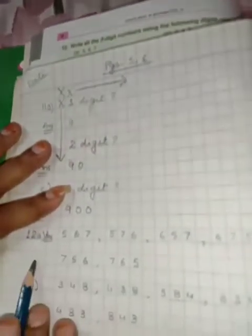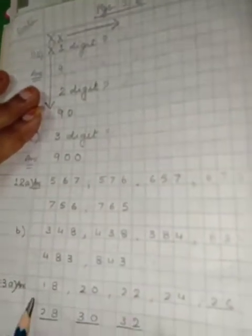12A answers also I have written. Three digits given. You have to make all three digits number. Here you see the answer. I have written 13A also. 13A is look at the pattern and fill in the blanks.